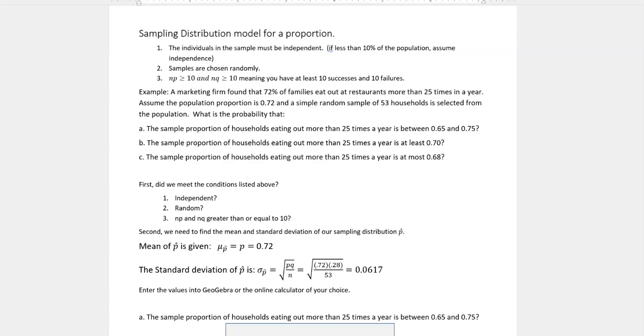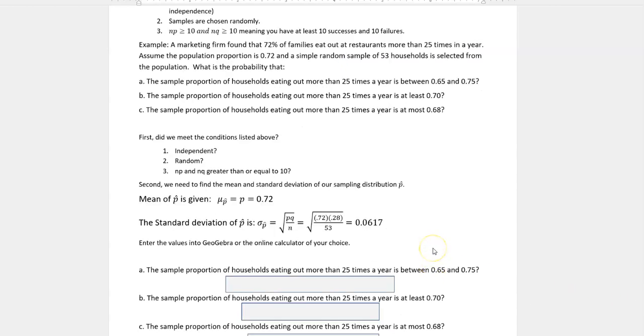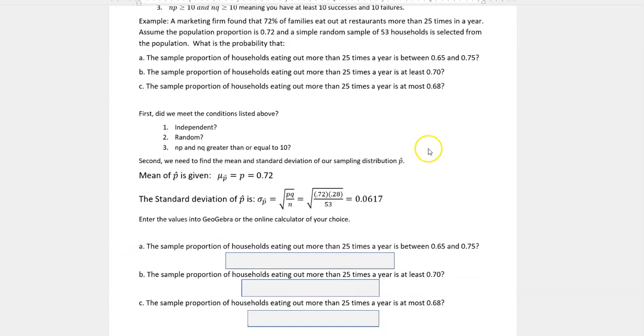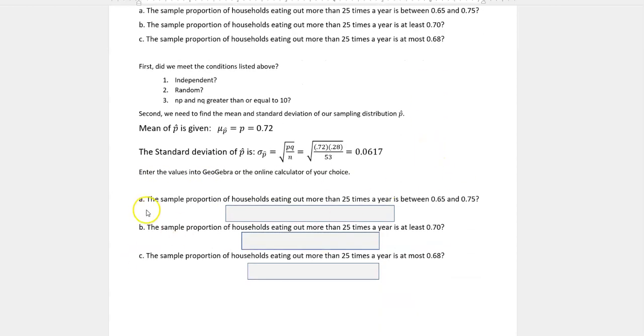Now I'm ready to answer those questions. You can enter the values into GeoGebra or any other online calculator. I'm going to use GeoGebra in a minute. I'm going to show you the answers first and then we'll go find those on GeoGebra. The first one says the sample proportion is between 0.65 and 0.75, so we're looking at a proportion between these two values.